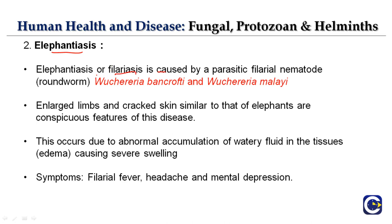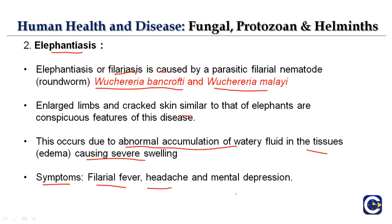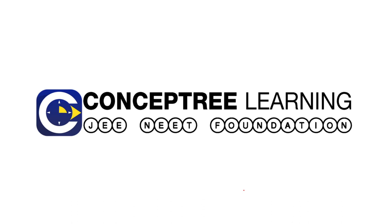The next helminth disease is elephantiasis or filariasis, caused by the parasitic filarial nematode — roundworms Wuchereria bancrofti and Wuchereria malayi. The enlarged limbs and cracked skin resemble an elephant's leg — hence the name elephantiasis. This occurs due to the abnormal accumulation of watery fluid in the tissues, called edema, causing severe swelling. Symptoms include filarial fever, headache, and mental depression. This completes Part 4 of Human Health and Diseases.